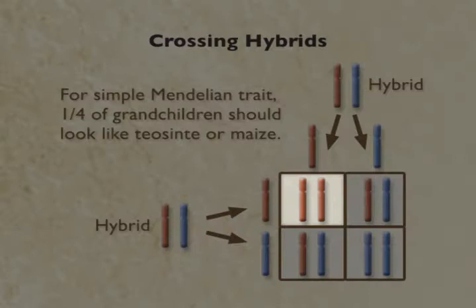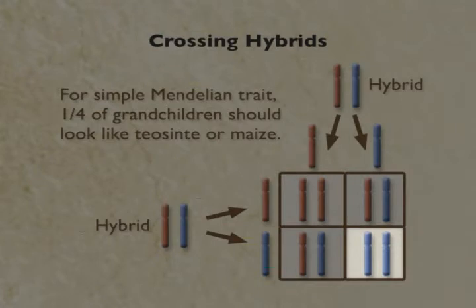A quarter of the offspring will randomly inherit two teosinte-like chromosomes. Another quarter of the offspring will inherit two maize-like chromosomes. So in this grandchild generation, you're generating different combinations that bring back together some of the chromosomes of the originals, or still a mixture of maize and teosinte-like chromosomes.